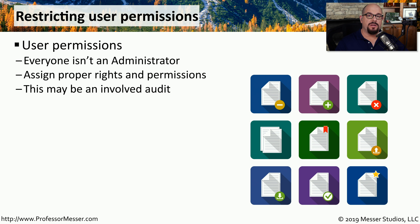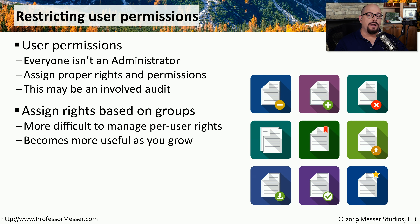It's important that user permissions on a system are configured to give someone just the rights they need to perform the tasks for their particular job. You never want to provide administrator access for everyone on the network, as this will allow malware to run as administrator, giving it full access to the computer. Determining exactly what permissions someone needs may require audits. Rather than assigning rights on an individual basis, many organizations create groups and assign permissions to those groups, making it easy to add users who then inherit those permissions.